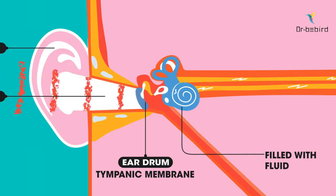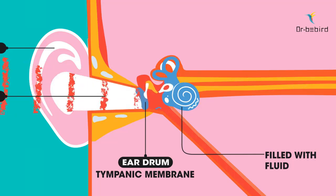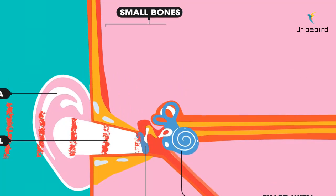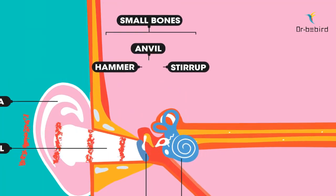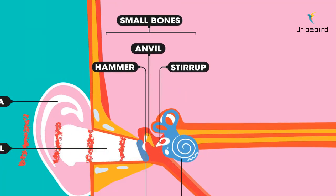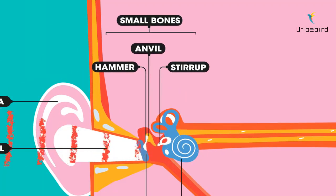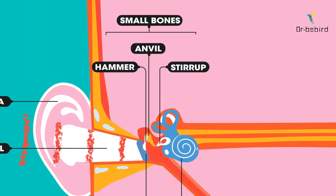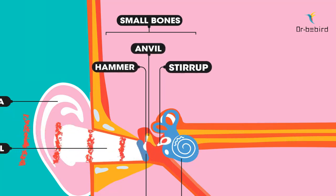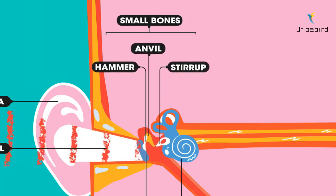As the fluid vibrates, this causes the small bones of the ear also to vibrate. There are three small bones: the hammer, the anvil, and the stirrup.